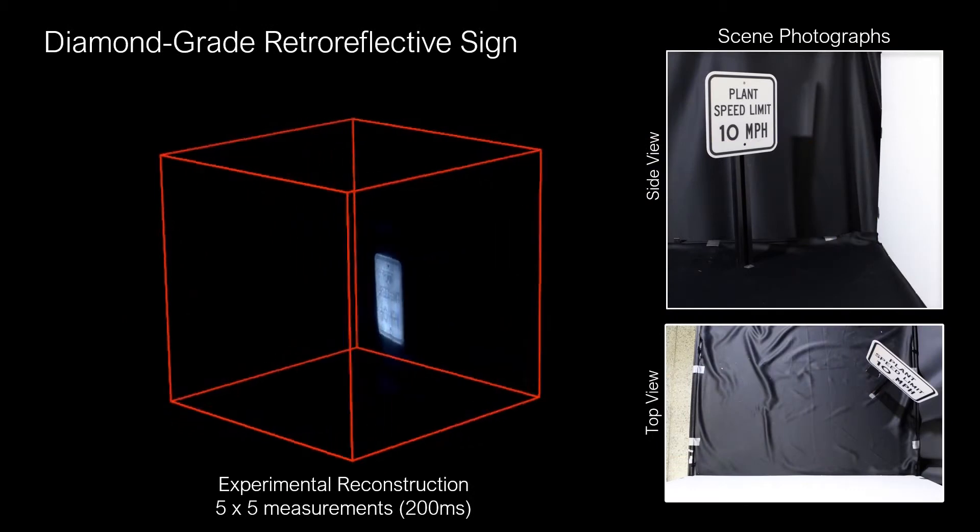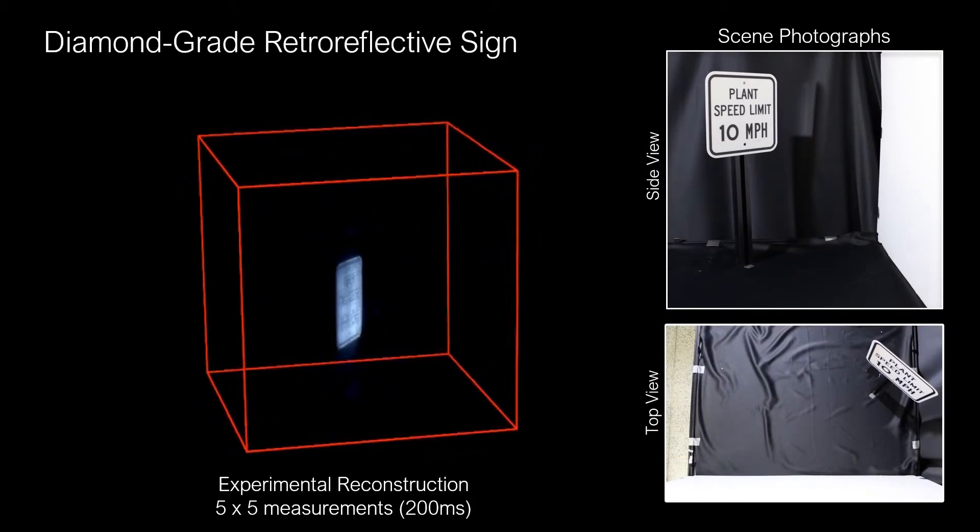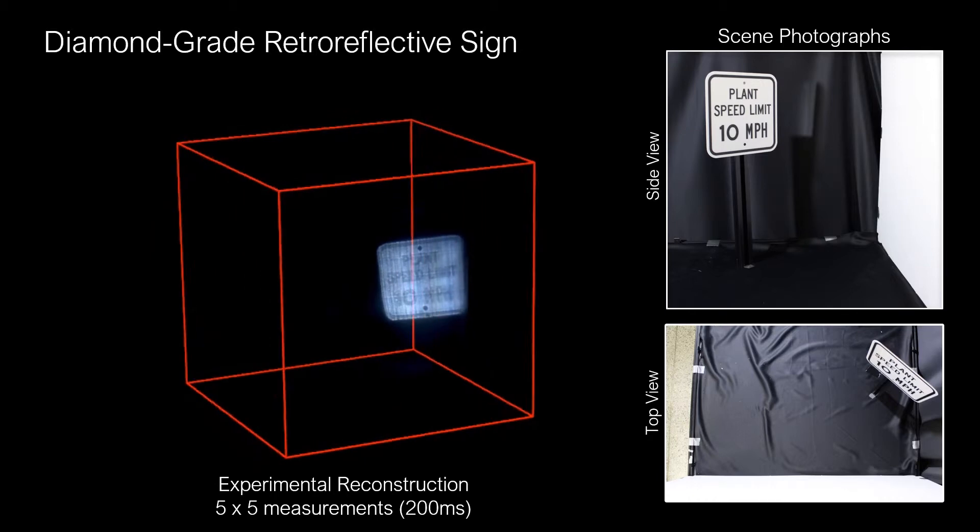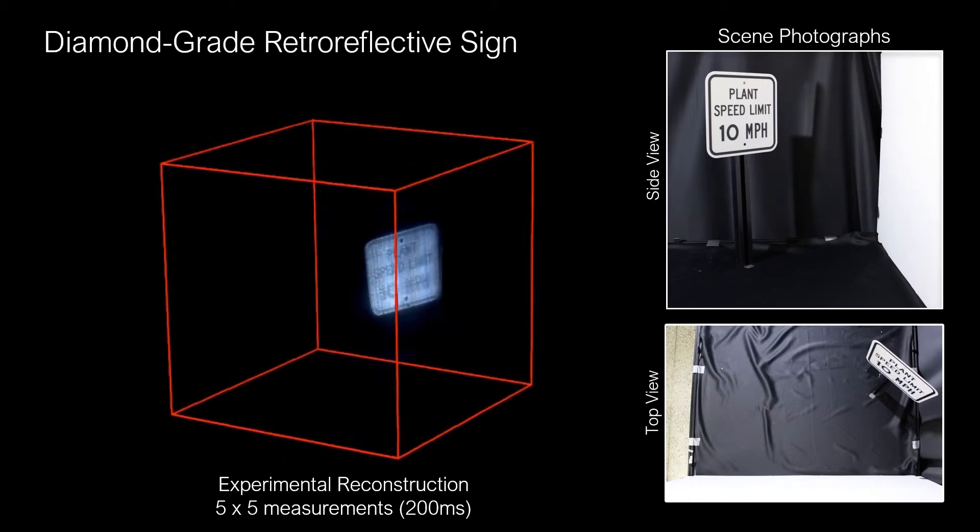Interestingly, there is also a specular part present in highly retroreflective signs, as in this diamond-grade retroreflective street sign.